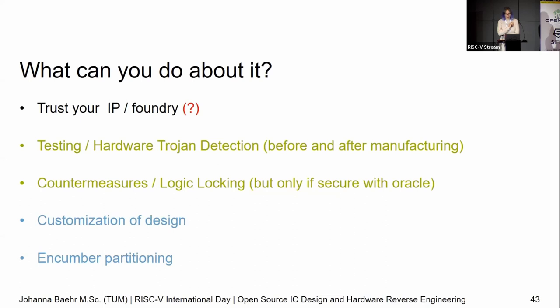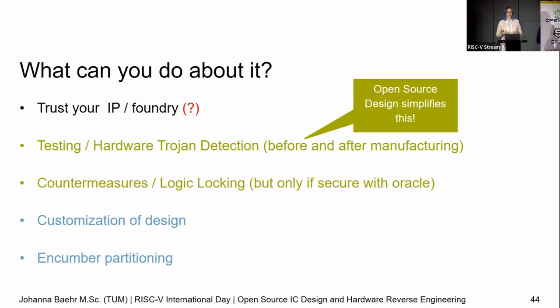I get asked often: what can I do? I always say, trust your IP — and that's something we can do in this community. This is the fantastic thing about open source: we don't have to worry about getting black-box designs, we can trust and verify ourselves. Trust your foundry — big red question mark. That's something you have to decide: is your foundry someone you trust or not? That's a different discussion. Testing and hardware Trojan detection before and after silicon — I think in the before-silicon case, open source really helps.